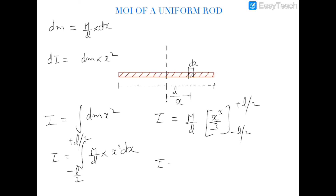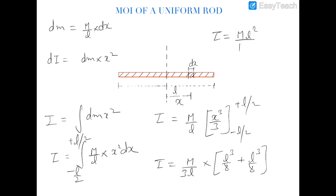Evaluating: I = (m/3L) × [x³] from −L/2 to +L/2 = (m/3L) × (L³/8 + L³/8) = mL²/12. So the moment of inertia of a uniform rod about an axis through its center of mass, perpendicular to the rod, is I = mL²/12. In further videos we will calculate the moment of inertia of different types of continuous objects.